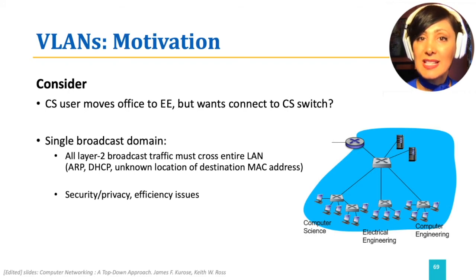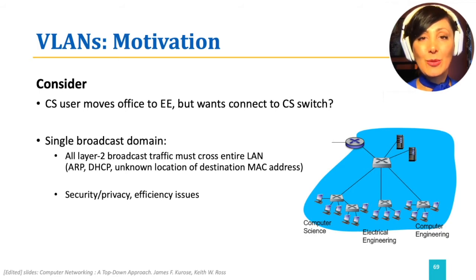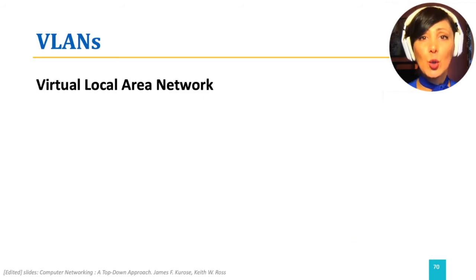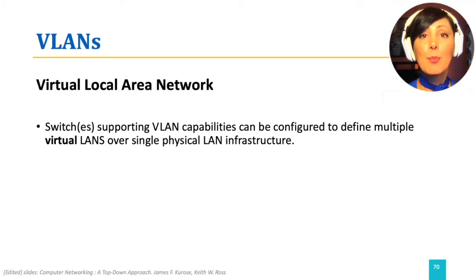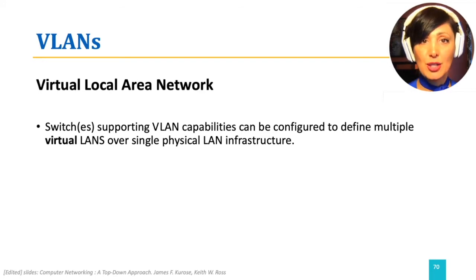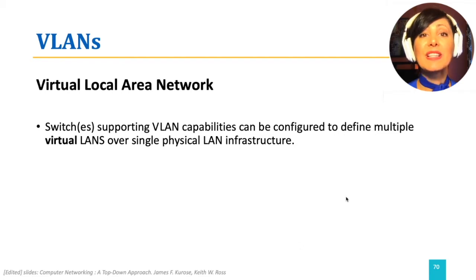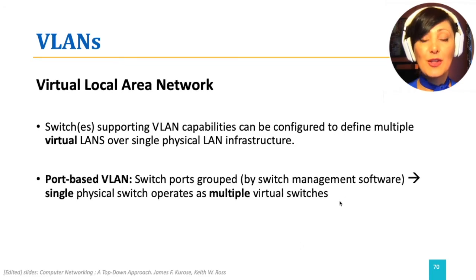To remedy this, we can use switches that support virtual local area networks. In virtual local area networks, known as VLANs, switches are configured to support multiple virtual LANs over a single physical LAN. To do this, port-based VLANs could be employed. Using port-based VLANs, ports of a single switch are grouped together.